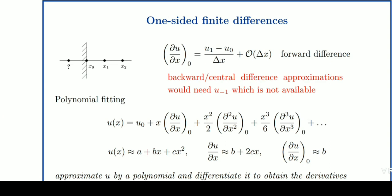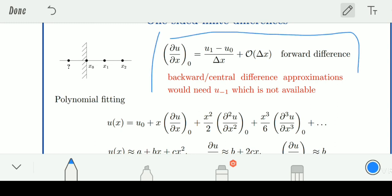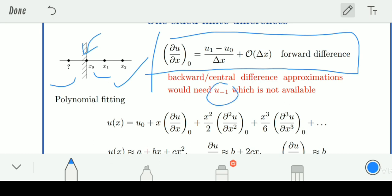Let us discuss the sixth slide of this PDF. I have already discussed the last four to five slides in my previous video — I will provide the link below in the description. This is a power difference formula which we are going to use. As you can see in the diagram, you have to find the value of X naught. The left-hand side terms are missing and you only have the right-hand side: X naught, X1, X2. So you cannot use backward and central difference approximations because those formulas need the u minus one term, which is not available in the given problem. Therefore, we will use the forward difference method here.